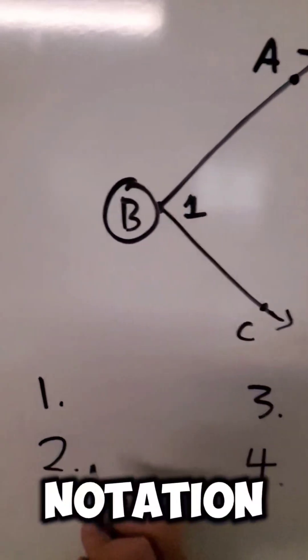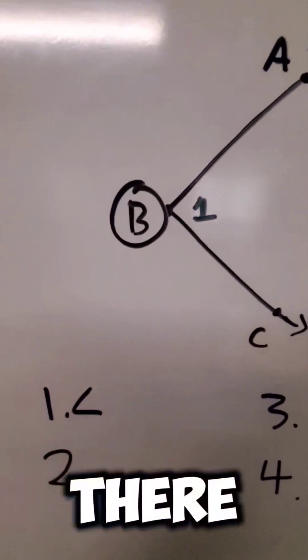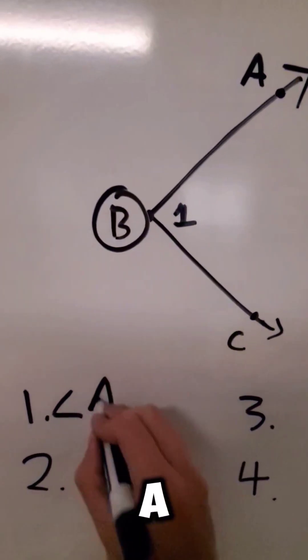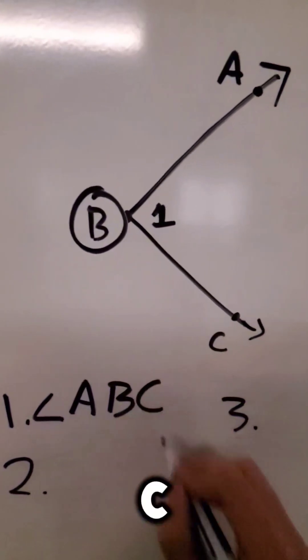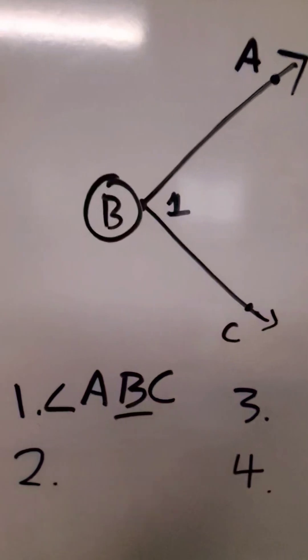Now we're going to use angle notation here which is this right there and we can name this angle A, B, C. Notice how that B is in the middle.